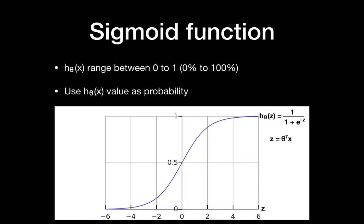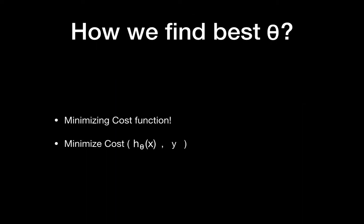Now we want to talk about logistic regression, and the sigmoid function is the key. The sigmoid function always gives an output in the range of 0 to 1. Its formula is 1 over (1 + e^(−Z)), where Z is exactly the same as your regression output θᵀX. So the sigmoid wraps the linear regression output to produce a proper probability.